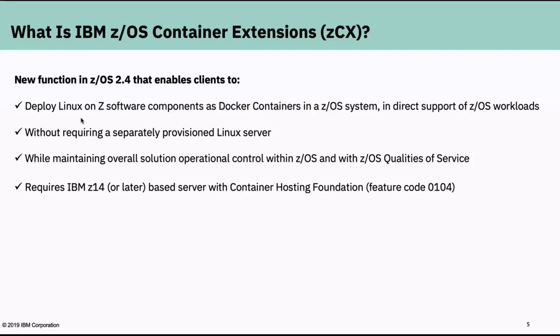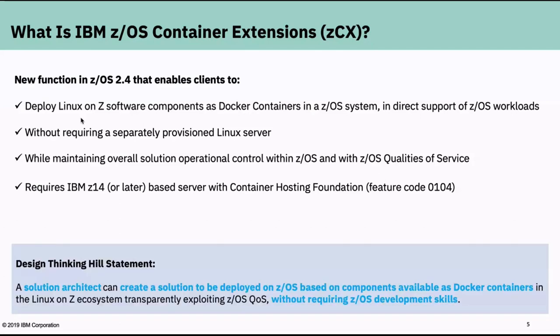In order to activate this function, you require an IBM Z14 processor, and it requires feature code 0104 enabled on that Z14 processor. Just to clarify, the Z14 prerequisite is for this specific function of 2.4, not for ZOS 2.4 in general — ZOS 2.4 will run on Z13s and earlier machines as well. But in order to exploit Container Extensions, you need a Z14 processor with this feature code. If I were to describe the capability using a design thinking hill statement: a Solution Architect can create a solution to be deployed on ZOS based on components available as Docker containers in the Linux on Z ecosystem, transparently exploiting ZOS qualities of service, and without requiring ZOS development skills.